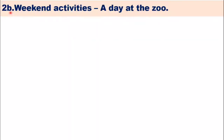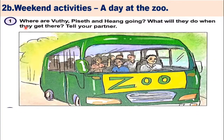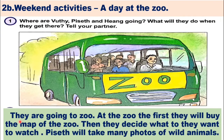This is what we are going to do when we are going to the zoo. What will they do when they get there? We are going to the zoo. Tell your partner. This is what we are going to the zoo.